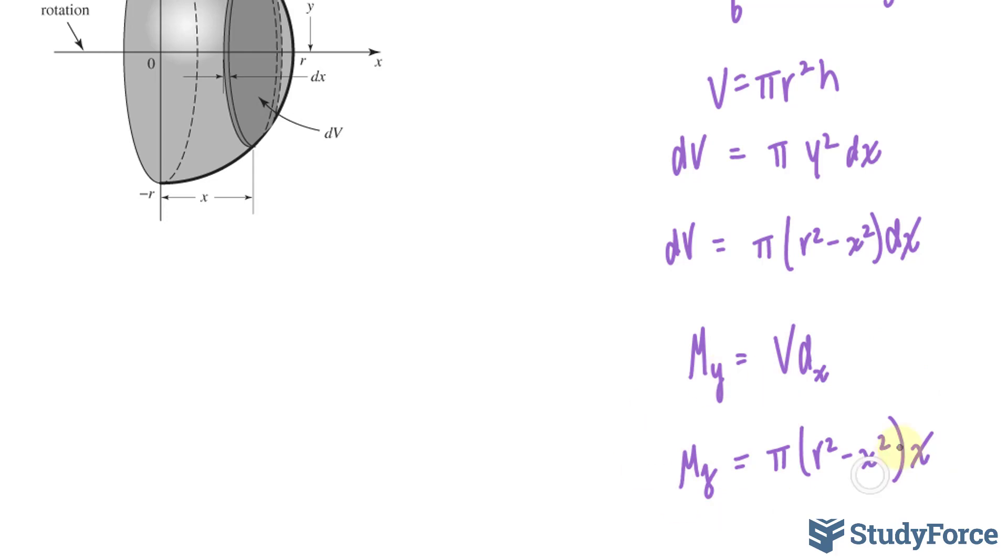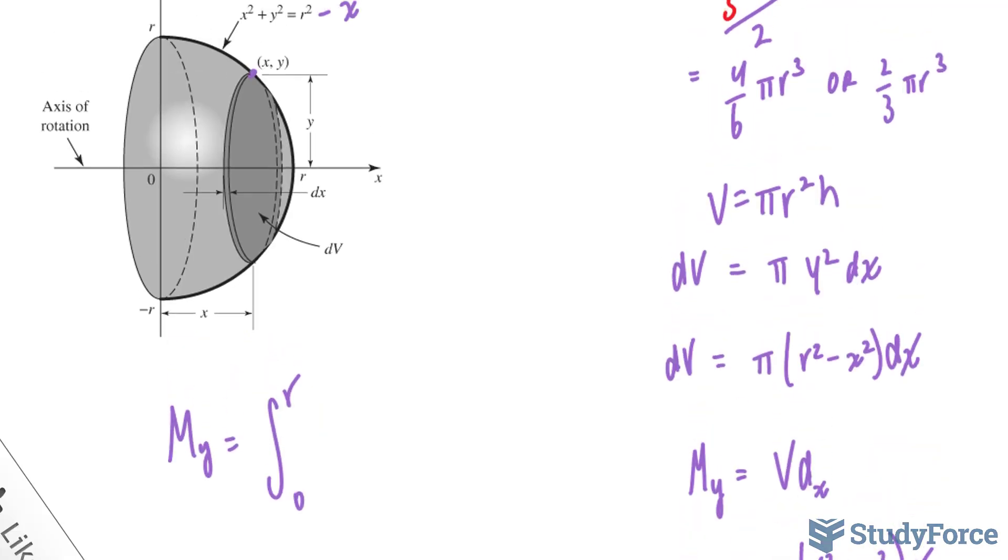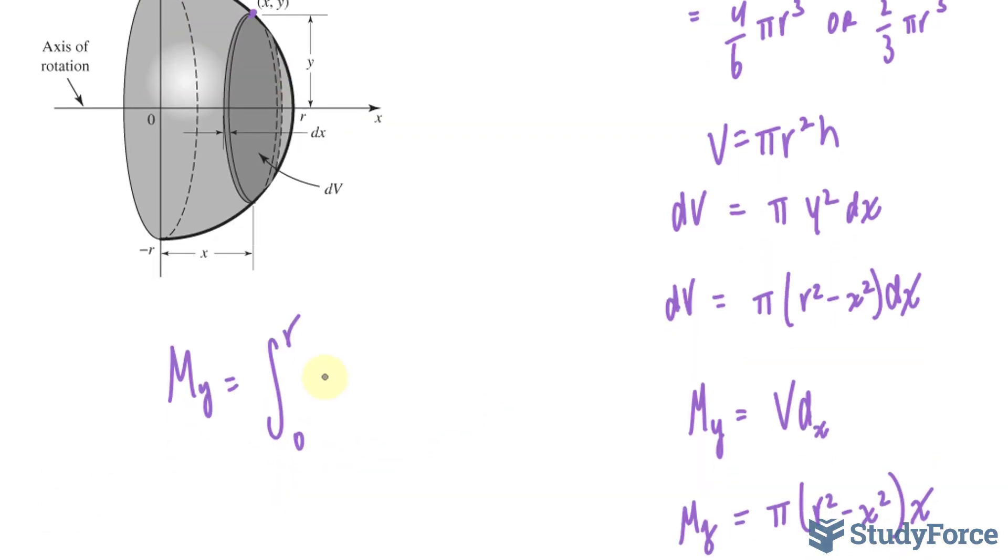Now that we've found this very important expression, by integrating this expression, we'll end up with the total moment. So let's go ahead and integrate this, and the bounds will be between 0 and r. So we want to use the radius when x is equal to 0, and the radius when x is equal to the end of this hemisphere. Pi r squared minus x squared x dx.